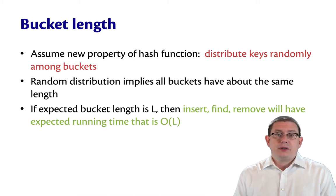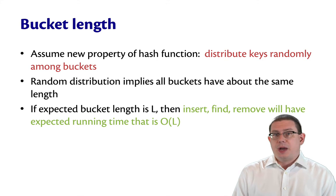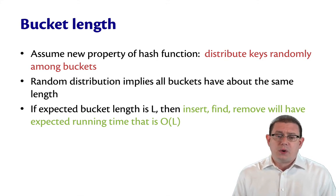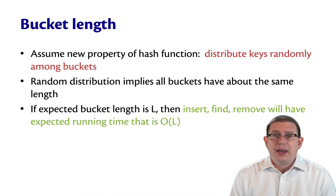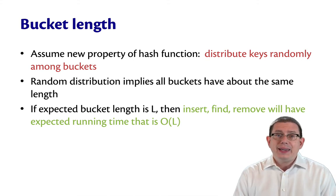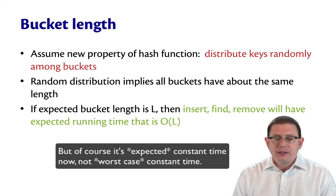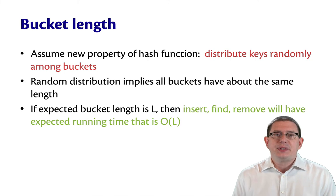If the expected bucket length is L, then insert, find, and remove will have expected running time that is O(L). If the expected bucket length is five, then they all have an expected running time of five, which is just constant. Big O of any constant is just big O of one. So really, what this means is we're getting a constant running time. That is what we need. We can get constant time insert, find, and remove operations with arbitrary key types if our hash function gives us this property.